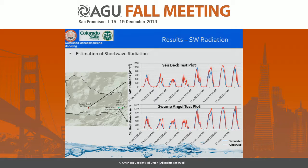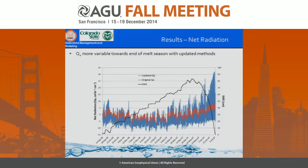When estimating shortwave radiation at the two sites — lower and upper elevation — it's not perfect, but we do okay, especially since the cloud data was 16 kilometers away. The observed is in red and simulated in blue, and we did fairly well at both sites. Taking that into net radiation, we compared the original estimates to the updated. The original follows temperature only, with not a lot of variation. In the updated version, net radiation varies quite a bit, especially toward the end when albedo is dropping.